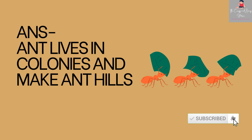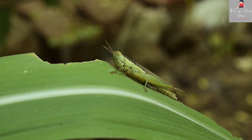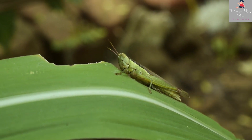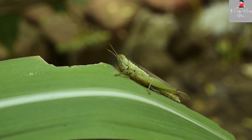Which insect is found in grass? Grasshopper! As you can see, the name suggests it lives in grass. It is also green in color.